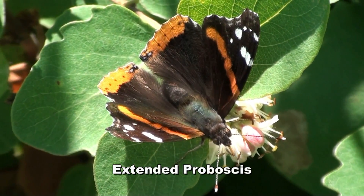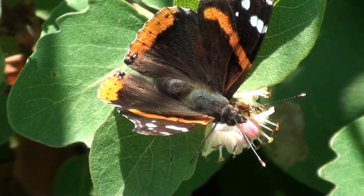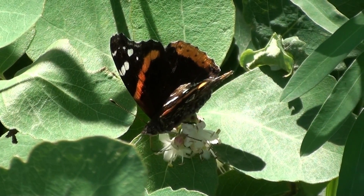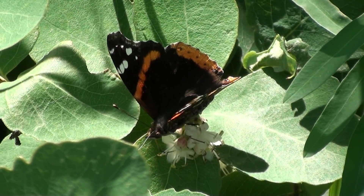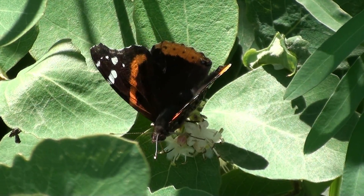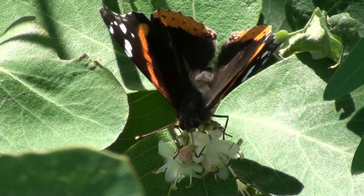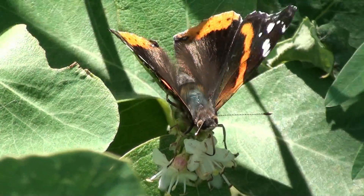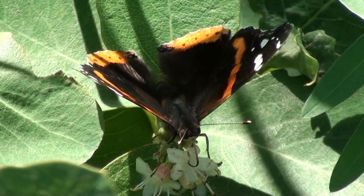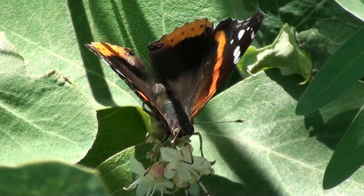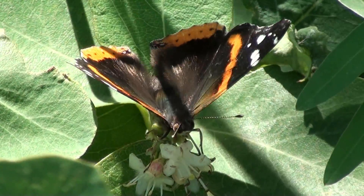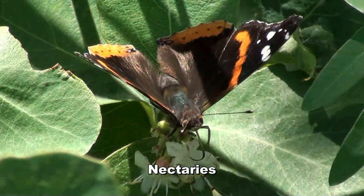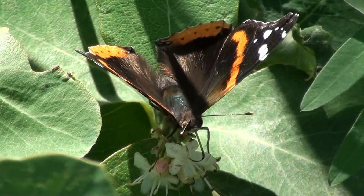Here you see the proboscis is extended and inserted into a flower. Note that the proboscis is very long and thin and very flexible — it's like a drinking straw. The tip of it is inserted into a flower, and it starts feeling around for the nectaries, or sugary water-containing fluids, in the flower.